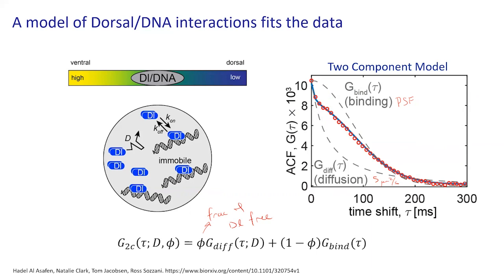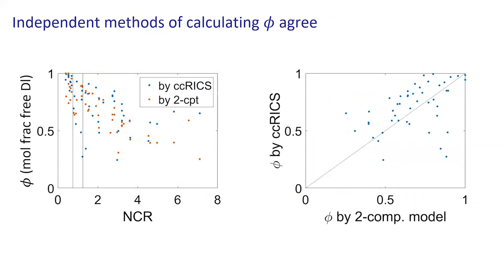The linear combination weight turns out to be phi — the fraction of dorsal that's free. So I have two different ways to measure phi: by the cross-correlation function and by how well the two-component model fits my data. If I plot those on top of each other, they largely agree — high correlation between the two, though not perfect, since both are noisy ways of measuring something.